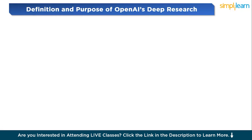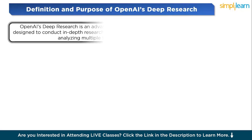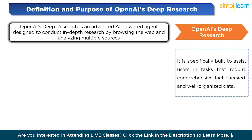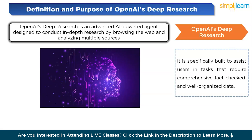Let's start by understanding the definition and purpose of OpenAI's Deep Research. OpenAI's Deep Research is an advanced AI-powered agent designed to conduct in-depth research by browsing the web and analyzing multiple sources. Unlike regular ChatGPT, which generates quick responses based on training data, Deep Research autonomously performs multi-step investigations, referencing various sources and synthesizing large amounts of information into structured reports. It is specifically built to assist users with tasks that require comprehensive, fact-checked, and well-organized data, such as professional reports, competitive analysis, and detailed research projects.